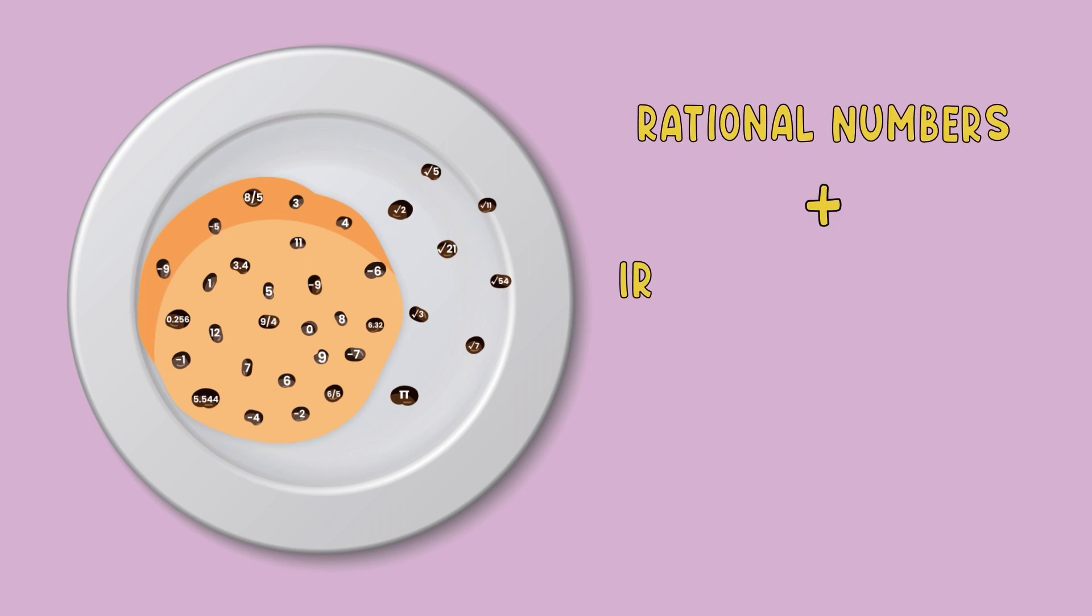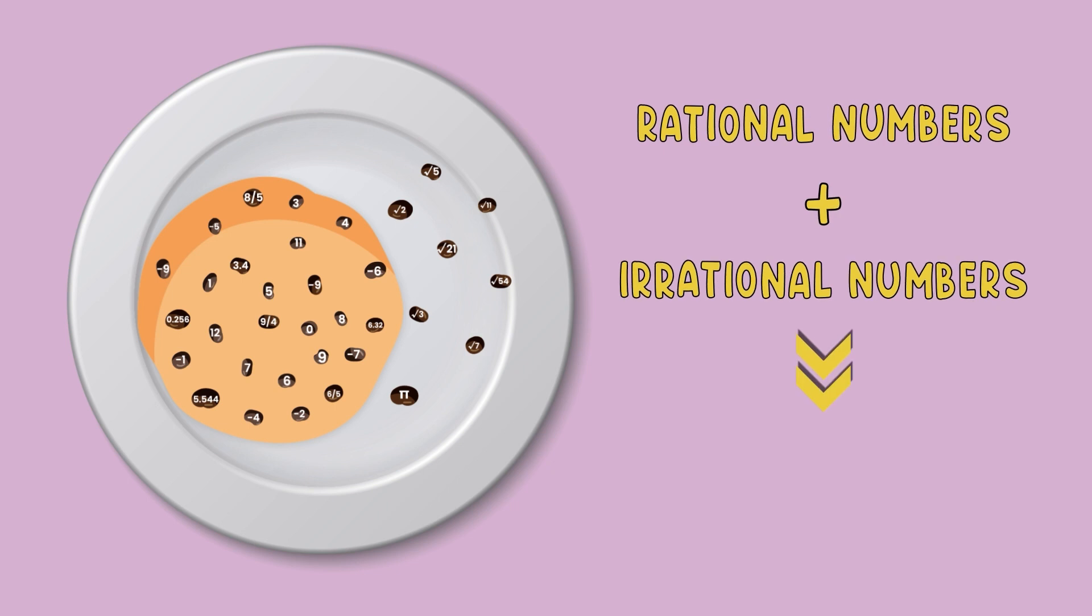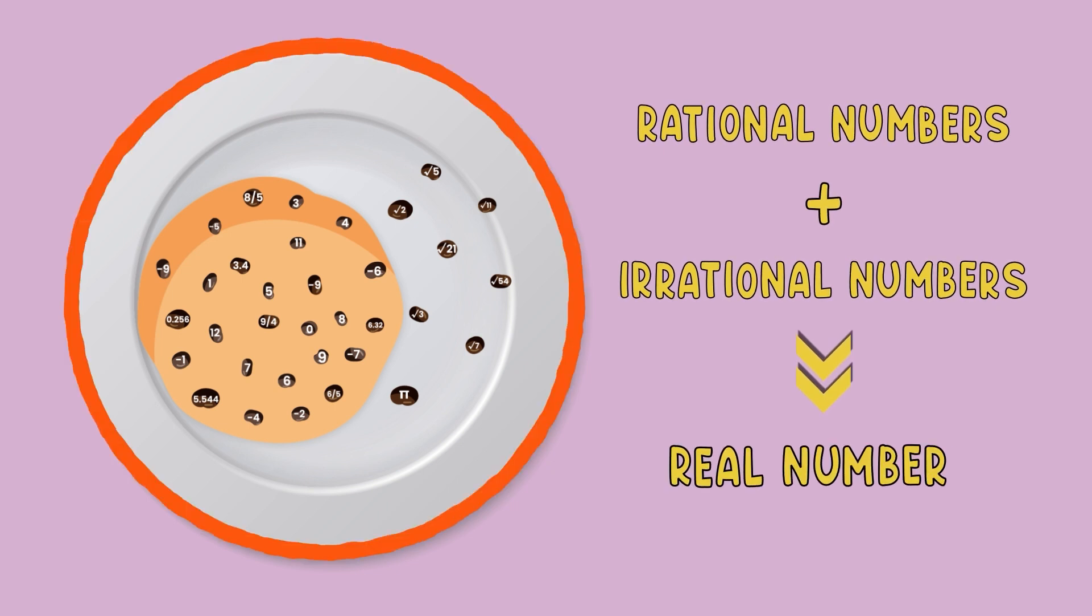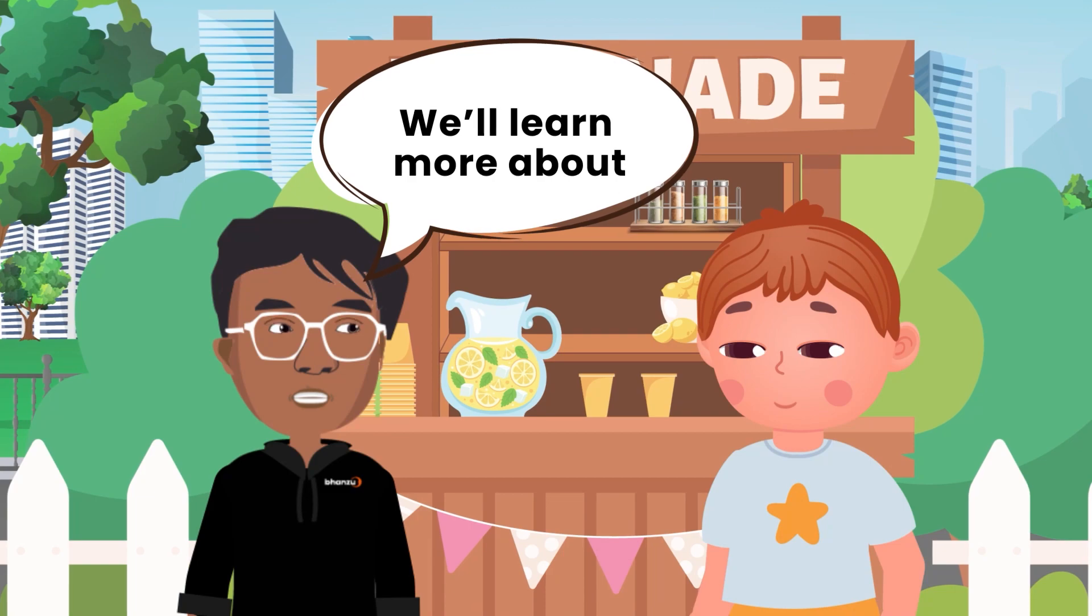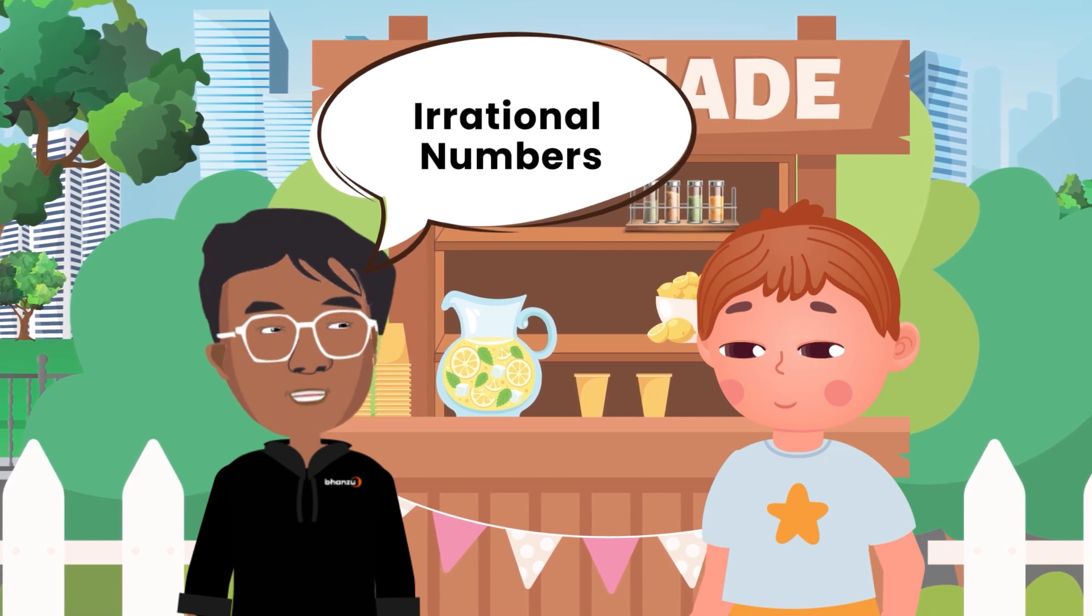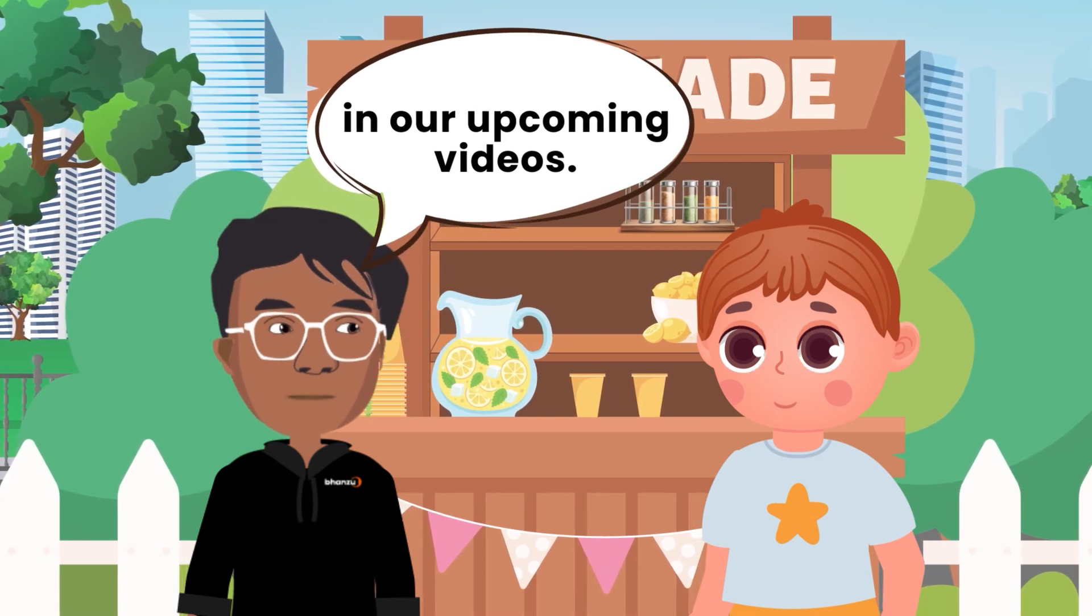Right. Now, irrational numbers fall outside our current circle. Together, both rational and irrational numbers form real numbers. We'll learn more about irrational numbers in our upcoming videos.